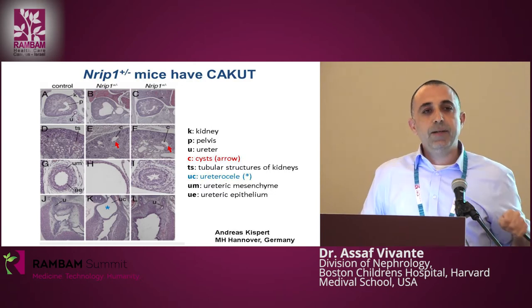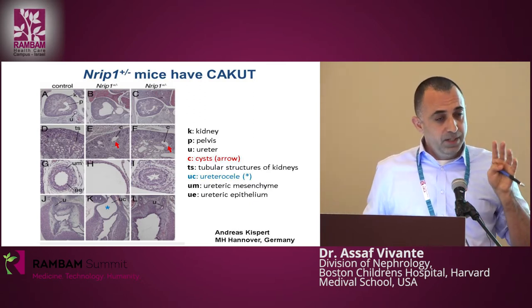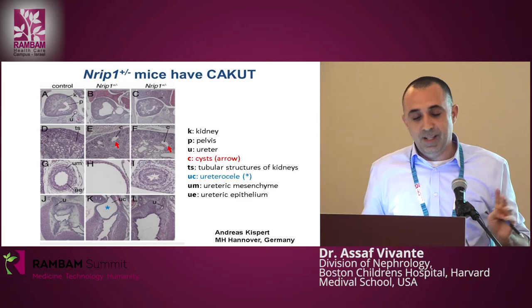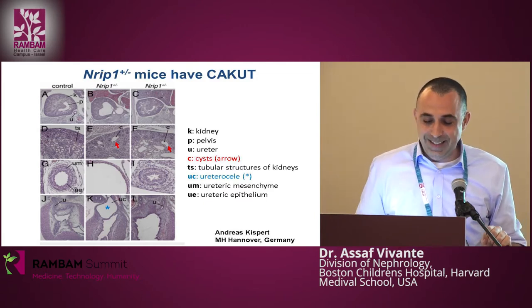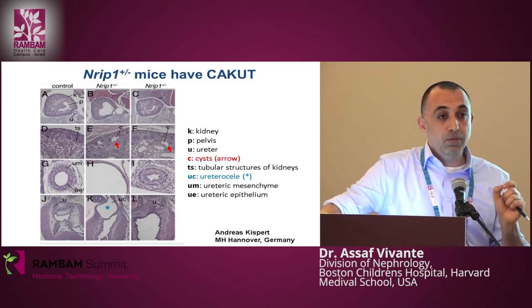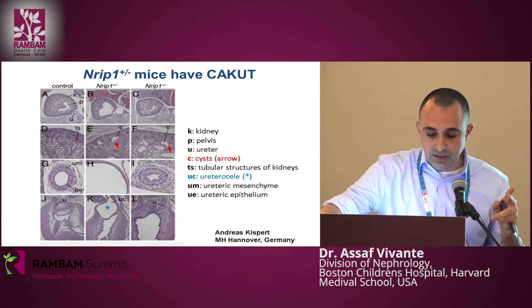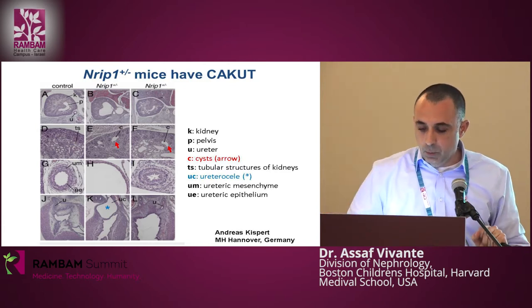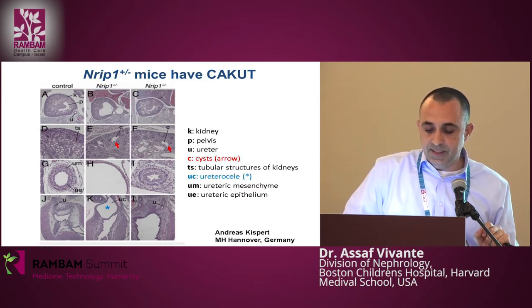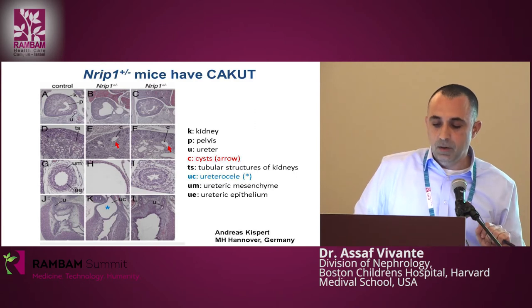Our final stage was to examine NRIP1 knockout mice that had been published 10 years earlier. Their genitourinary system had never been studied, as in our patient. The mice had a subtle phenotype of problems with ovulation and fat metabolism. When we obtained heterozygous mice and examined their genitourinary system, we found hypodysplastic kidneys, cysts in the kidneys, hydroureter, and hydronephrosis, which established the causality of the gene.